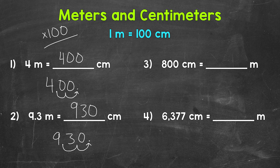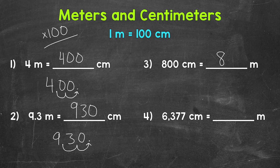Let's move on to number 3: 800 centimeters equals how many meters? Each group of 100 centimeters equals 1 meter, so we need to see how many groups of 100 are in 800 — in other words, 800 divided by 100 — that gives us 8. So 800 centimeters equals 8 meters. When we go from centimeters to meters, we divide by 100.